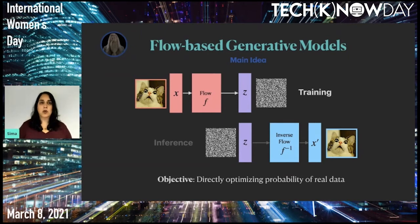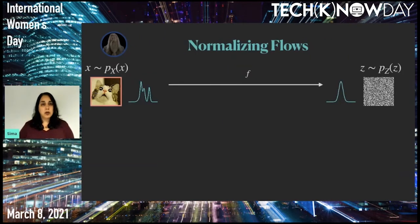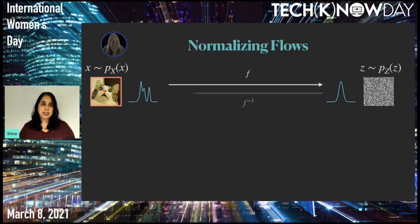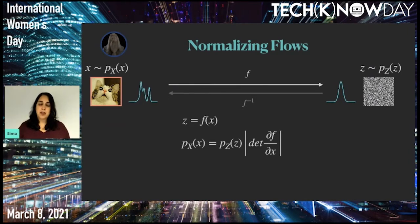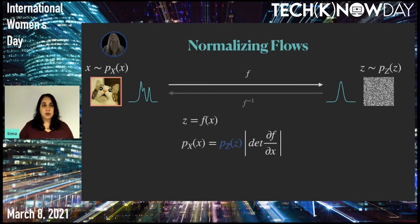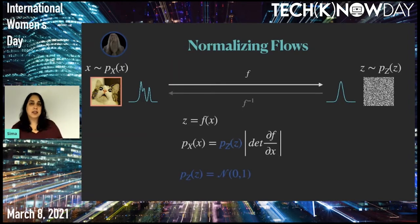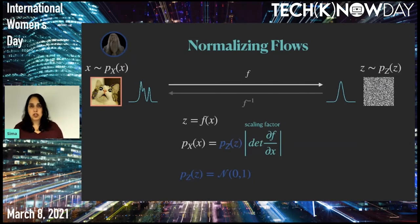A flow, or normalizing flow, is a probabilistic tool to map X from a complex distribution into Z from a simpler distribution using an invertible function, so we can also go back from Z to X. We can use the mapping between Z and X to write the probability of X — which is hard to compute — as a function of the probability of Z, which is easier to compute. Following the change of variable rule, we get an expression with two terms: the first is P of Z, the probability of our simpler distribution, where we decide the latent space distribution — usually a normal distribution. The second term is a scaling factor, the determinant of the Jacobian matrix, which ensures the expression is a valid probability distribution summing to one.